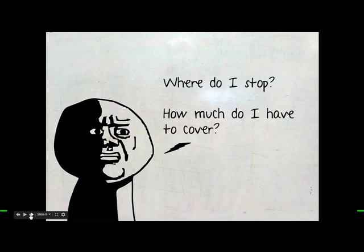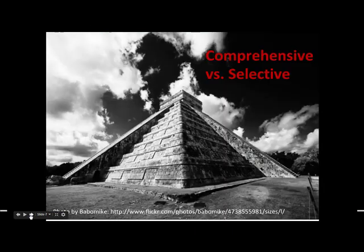One of the most common questions is where do you stop, and that can be really hard to decide — whether you have enough research and when you can finally stop. This is probably the most stressful part of the literature review process. There are a few ways to look at it. I like to think of it as a pyramid: you can get really comprehensive, or you can go to the top of the pyramid and be pretty selective, depending on the type of literature review that you're writing.